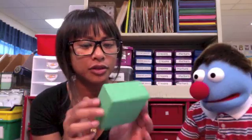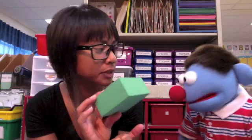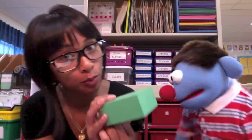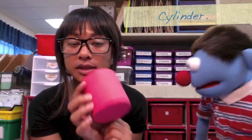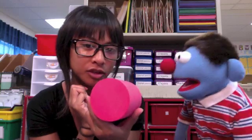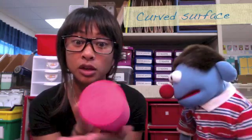So rectangular prisms are made of rectangle faces and square faces. Do you know any things you would see at home or around the classroom that would be like a rectangular prism? A shoe box! Yes, or a tissue box. Our next shape is called a cylinder, and a cylinder has circle faces. A cylinder has two circle faces — that's one and two — and it has a curved surface around it so that it can roll.